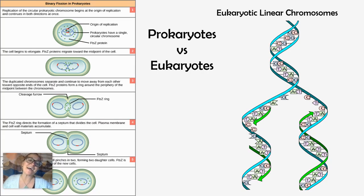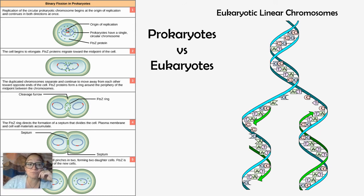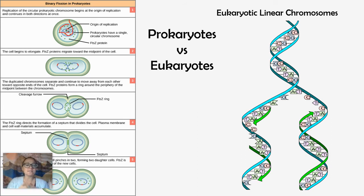Both prokaryotes — bacteria and archaea — and eukaryotes go through DNA replication. In eukaryotes, we have linear chromosomes. In prokaryotes, the chromosome is one circular chromosome. Prokaryotes have an origin of replication — shown in red — where helicase begins to separate and unzip the DNA to make copies. It follows the same process with DNA polymerase 3, helicase, and ligase. In eukaryotes, we have linear chromosomes.